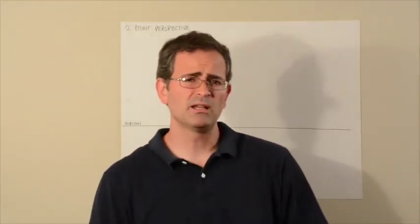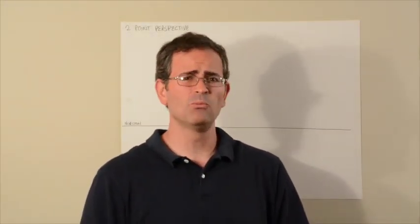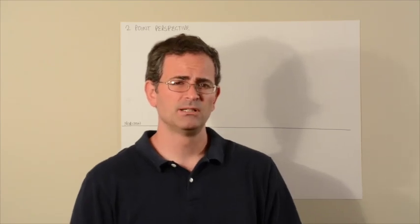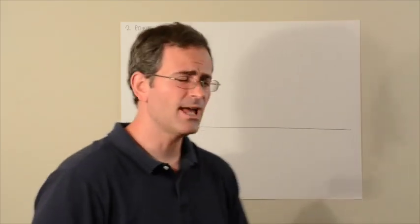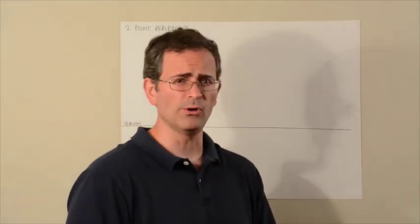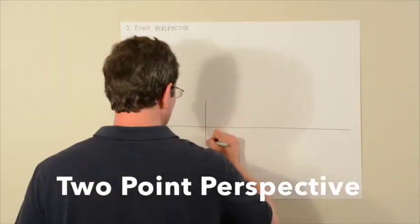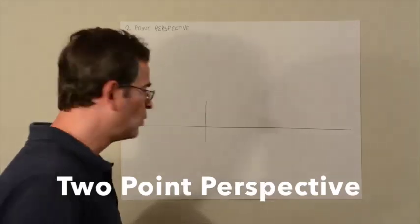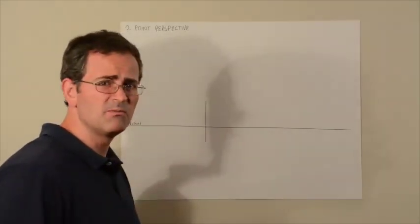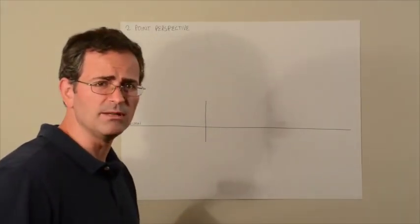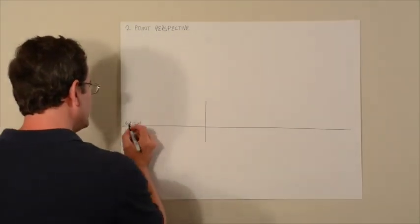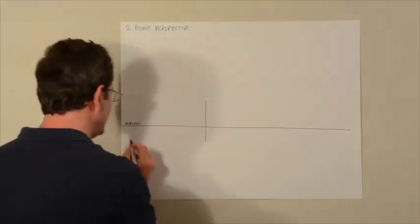So one-point perspective works great for when you have a single plane that's facing towards you or only two parallel lines. But what if you were looking at the corner of a building? The corner is closer to you. Which of the two planes is perpendicular to your vision? Neither one. So in this instance, you would need two vanishing points. And this is called two-point perspective.